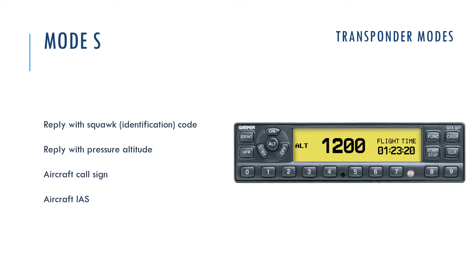In Mode S, the transponder — in addition to Mode C — can also reply with the aircraft's call sign and indicated airspeed.